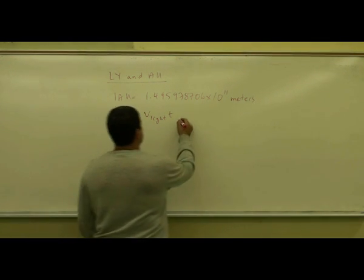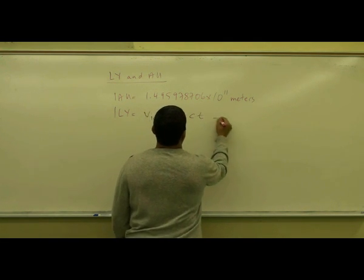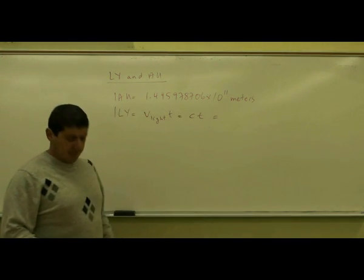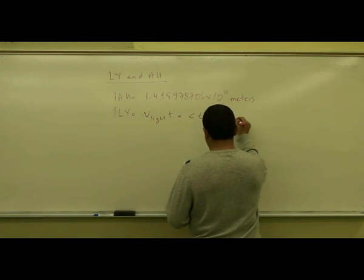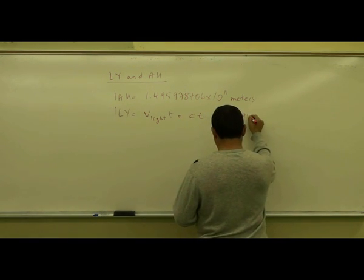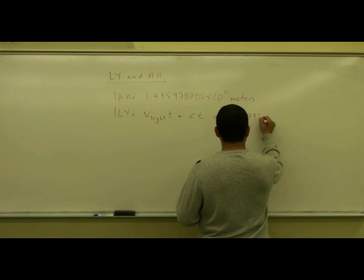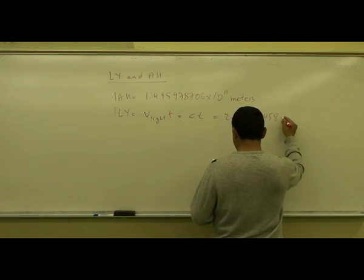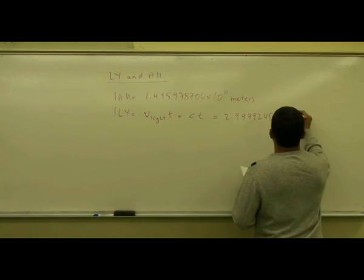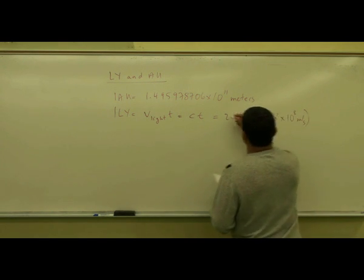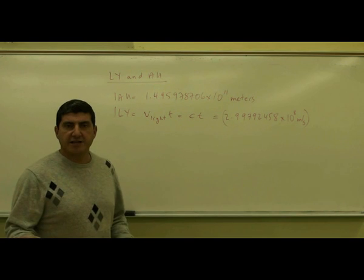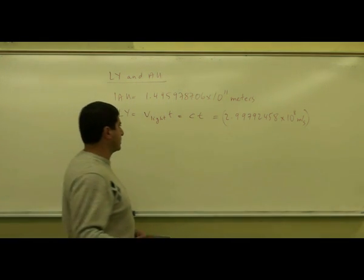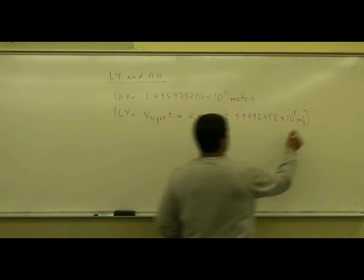The velocity of light is usually written as C. So the speed of light, exact value again, is 2.99792458 times 10 to the 8 meters per second. So it's almost abbreviated as 3 times 10 to the 8 meters per second. Then you multiply that by 1 year.